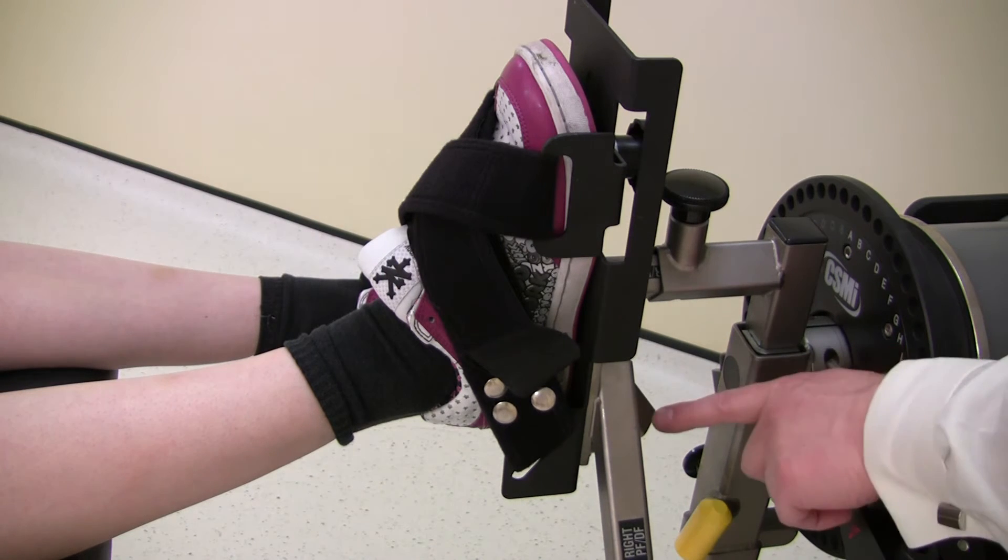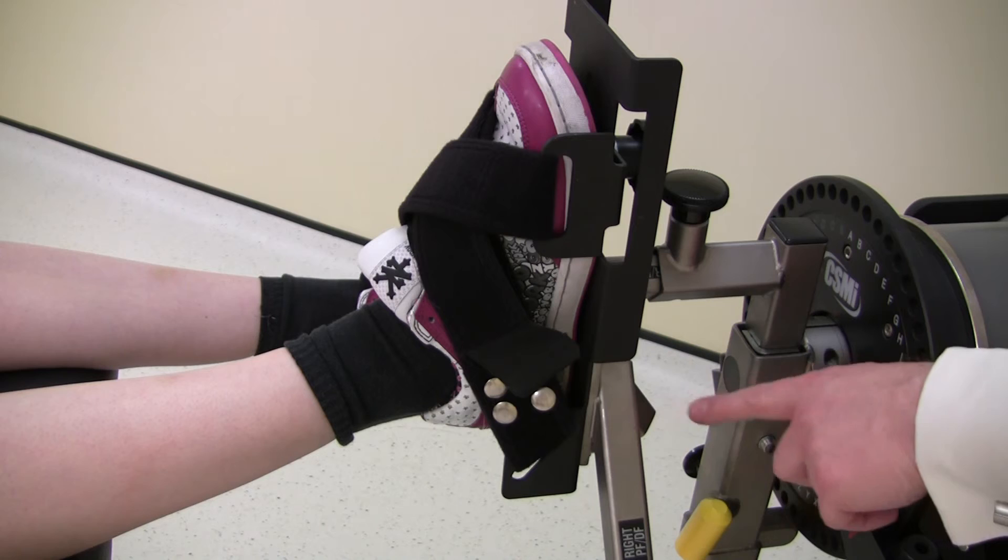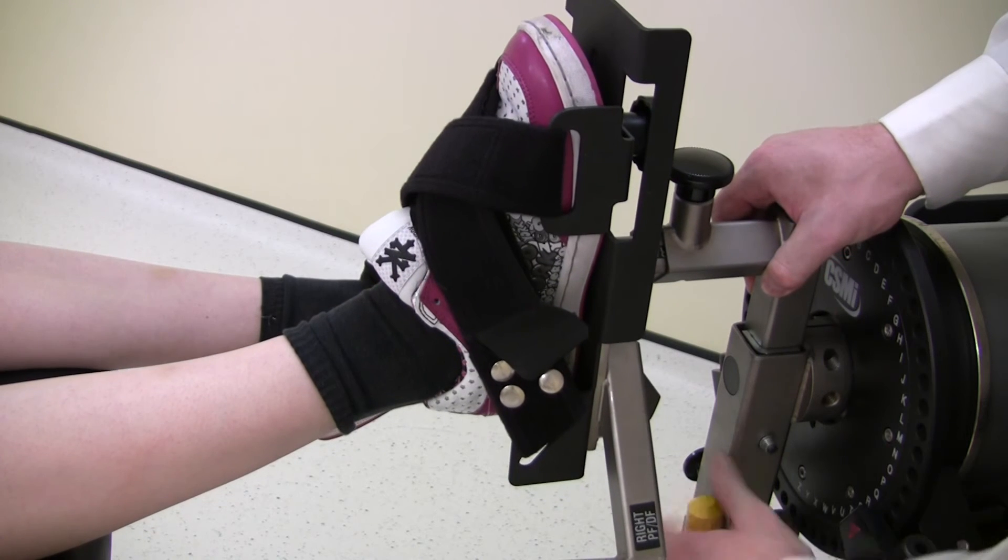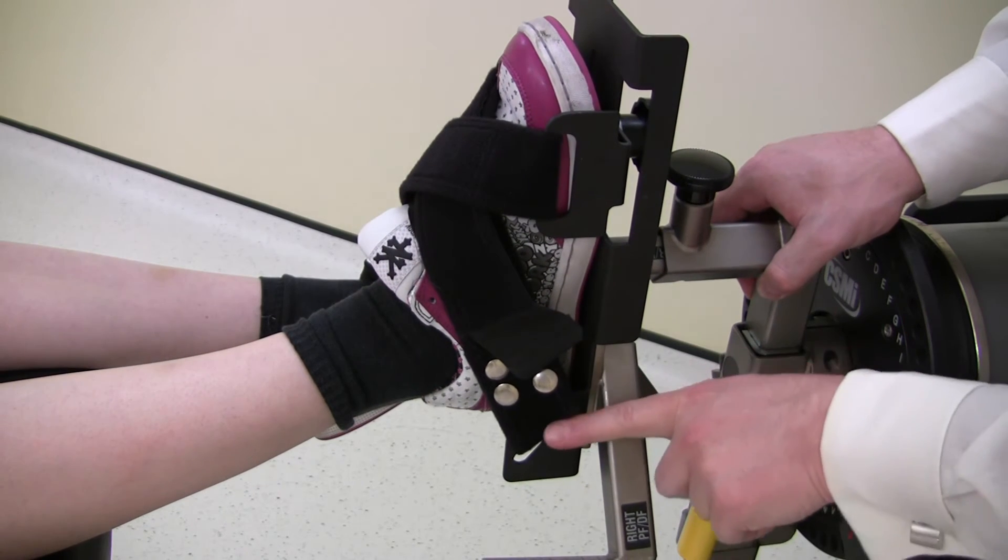The axis of rotation is set once the heel of the foot is opposite the black dot on the dynamometer input arm. Adjust by loosening the ankle adapter and extending or shortening the tube.